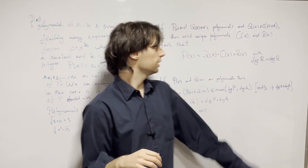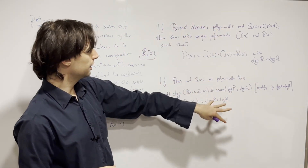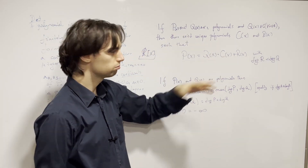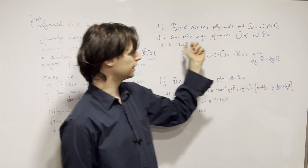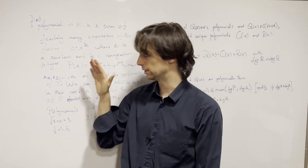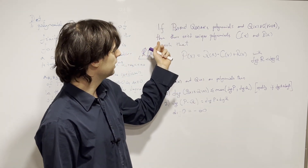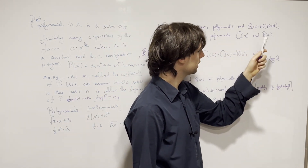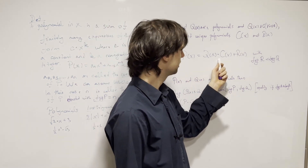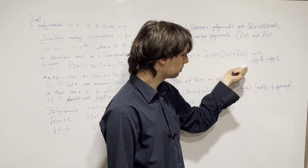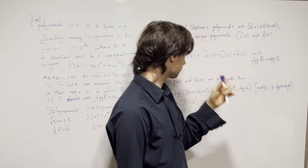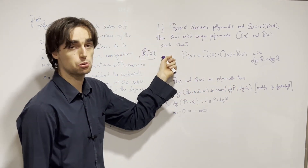Also, 1 over x is not a polynomial. Now there are two introductory theorems. The first: if p of x and q of x are polynomials — it doesn't specify what kind of coefficients — and q of x is not the zero polynomial, then there exist unique polynomials c of x and r of x such that p of x equals q of x times c of x plus r of x, where the degree of r is less than the degree of q.